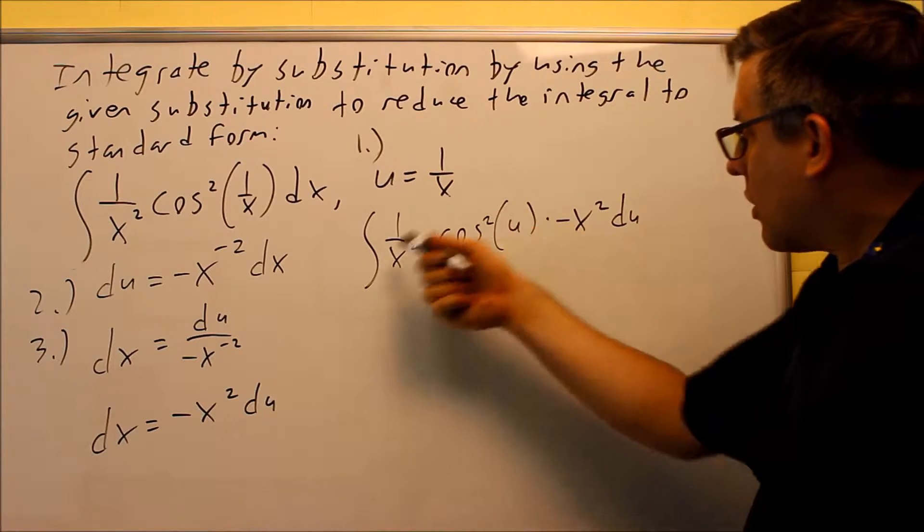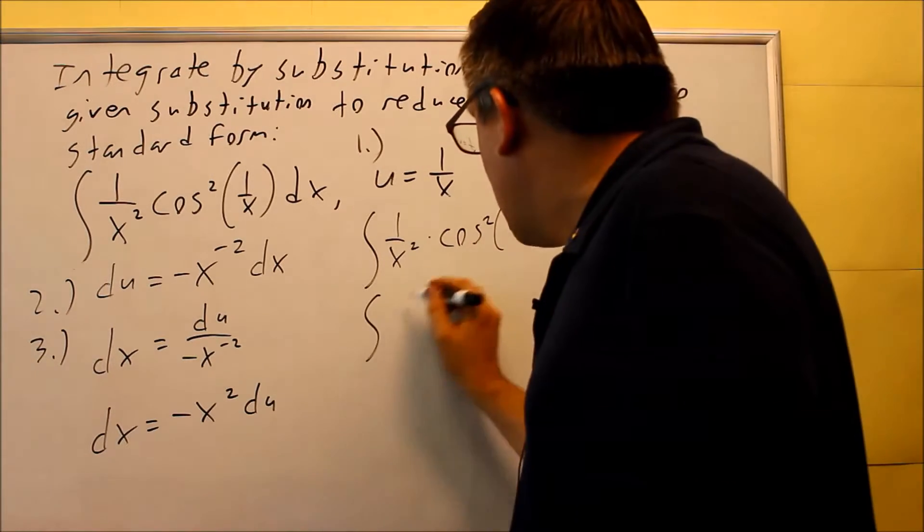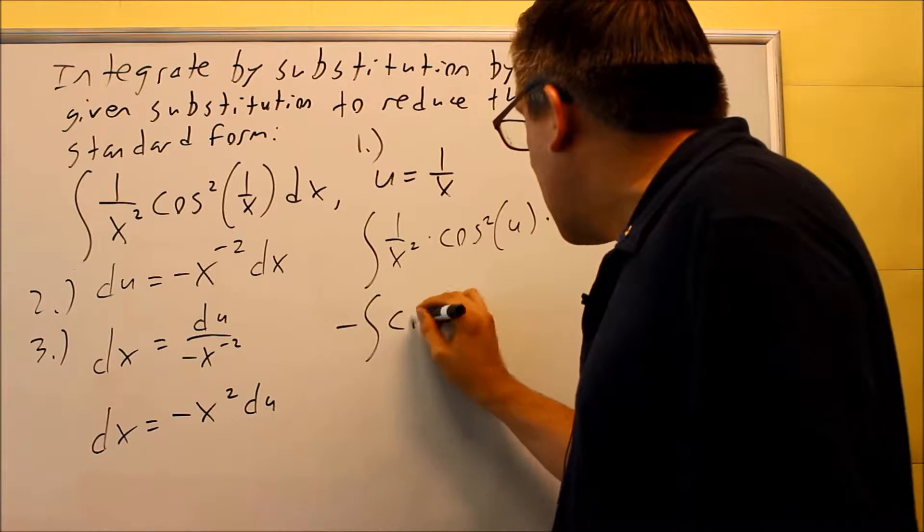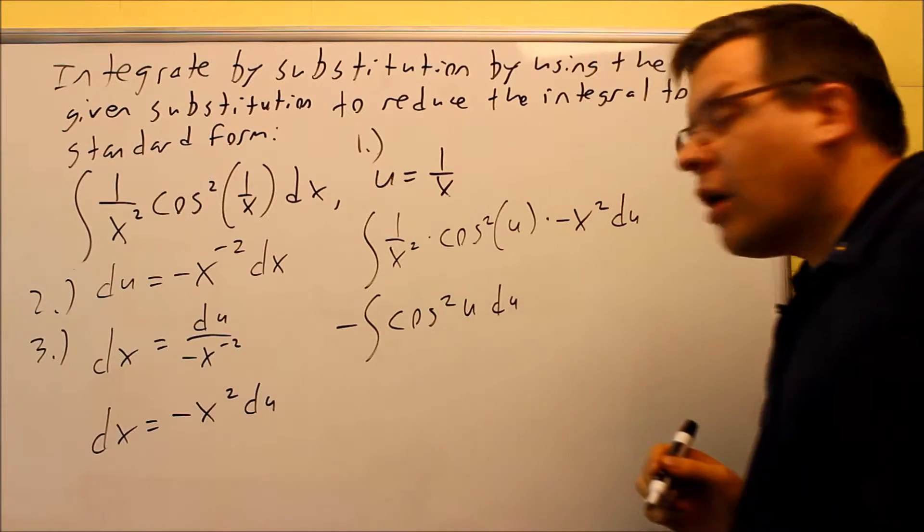Now that's complete, we can simplify this. We can cancel out the x squared, and then we get the negative we can put on the outside. So this is actually what our problem is going to turn into.